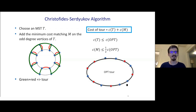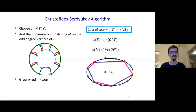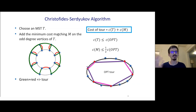I claim the cost of the matching is at most half the cost of opt. Consider the odd vertices of the tree along the best possible TSP tour — I've highlighted the odd vertices in red. The restriction of the optimal cycle to these odd vertices costs at most opt. There are an even number of odd vertices, so you can partition this subtour into two matchings — one in purple and one in pink. Therefore the cheaper one costs at most half of opt, and a minimum cost matching costs at most half of opt. Together you get a three-halves approximation.